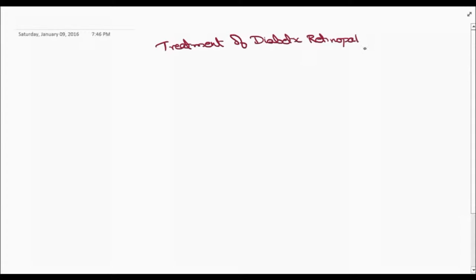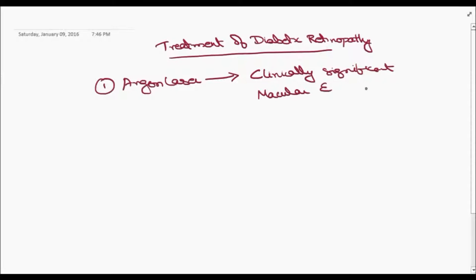Treatment of diabetic retinopathy: How to treat CSME. Argon laser is used for CSME. All patients with CSME have to be lasered irrespective of the visual acuity.